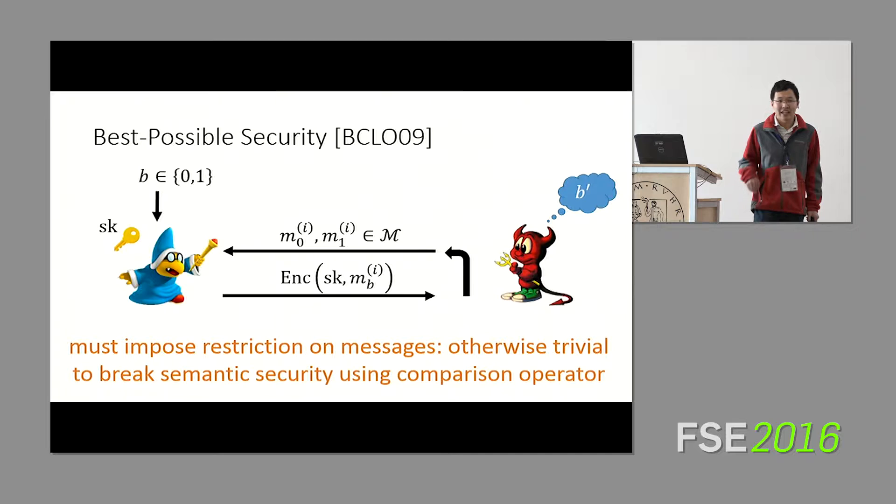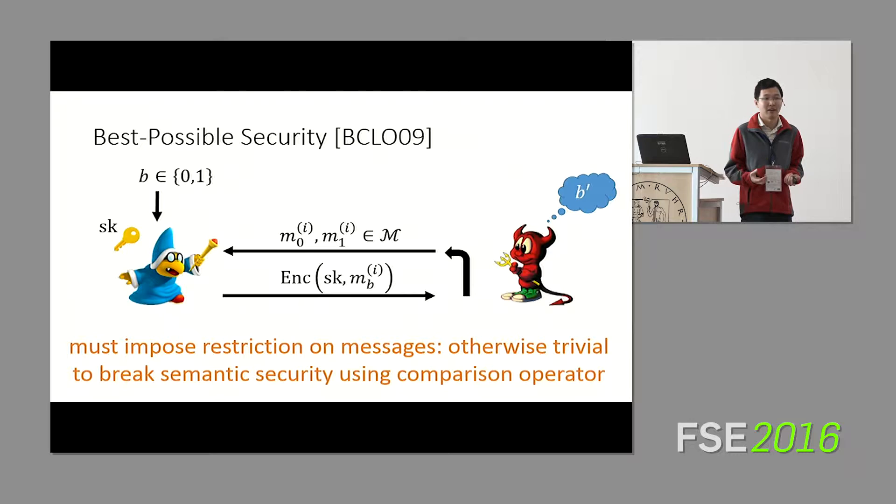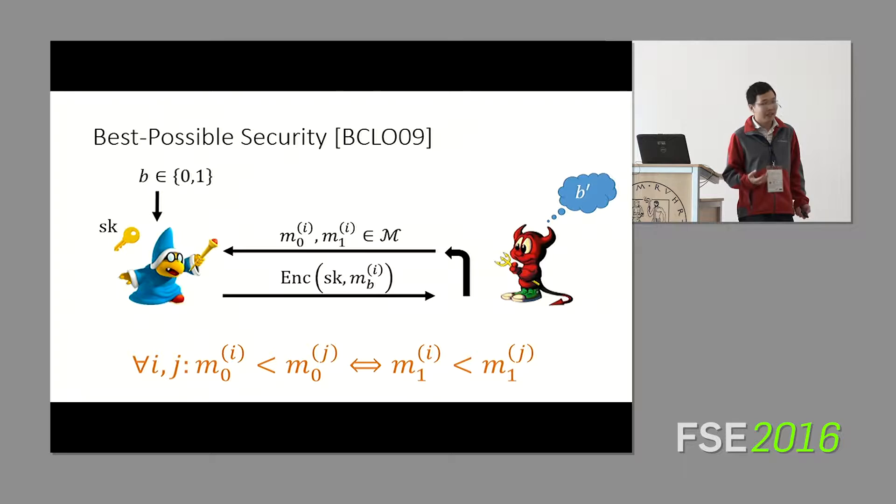Now, if we just take this definition and consider the order-revealing encryption case, we immediately run into a problem. The problem is that an adversary, given a publicly evaluatable comparison function, can trivially distinguish the left and right worlds simply by sending encryptions that do not preserve the order. By using the public evaluation function, the adversary now learns whether he got encryptions of the left or encryptions of the right. So this is not a reasonable security notion as stated.